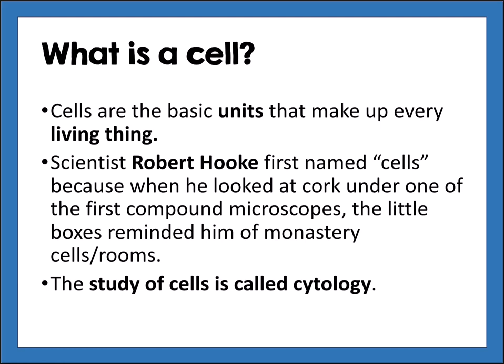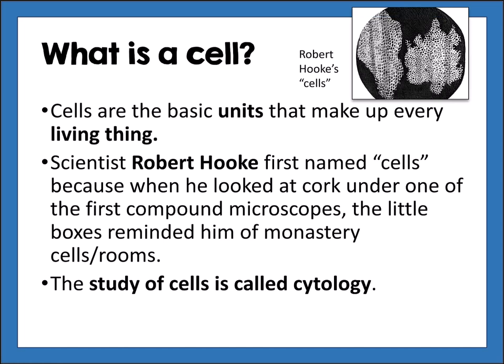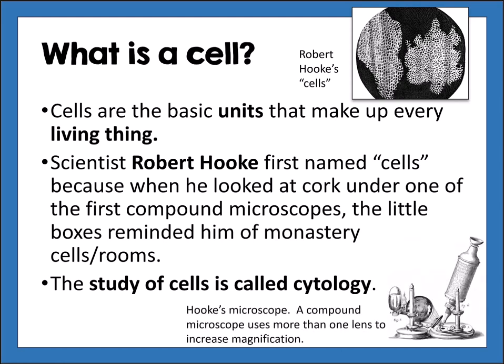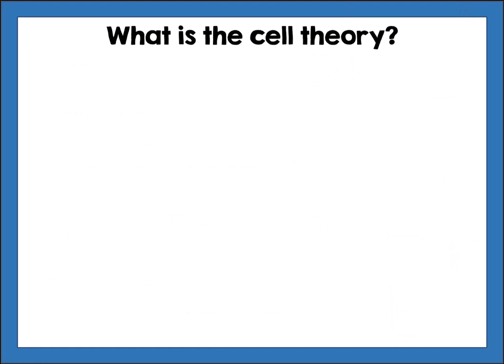This is what Hooke saw in the cork that made him describe them as little cells. This is a microscope similar to the one he used. A compound microscope uses more than one lens — you will use a compound microscope in this unit — and that helps to increase magnification.